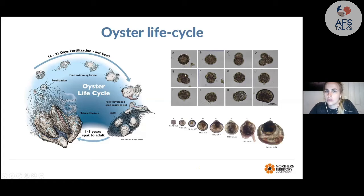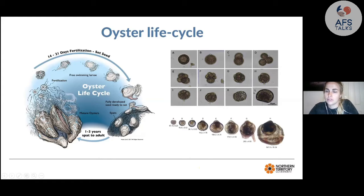On the right-hand side are development pictures of the tropical rock oyster: A is the egg, B is fertilized with a polar body, C and D show the developing egg, K is a trochophore, and L is the first stage — a D-stage larvae at about 16 hours post-hatch. Down the bottom are the larval stages of the tropical black lip, growing from D-stage all the way to spat at about 21 days of age.